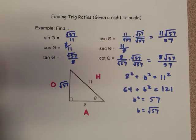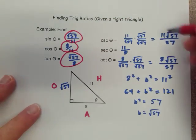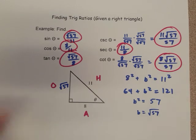So, when all's said and done, we have our six ratios. We've got sine, cosine, tangent, cosecant, secant, and cotangent.